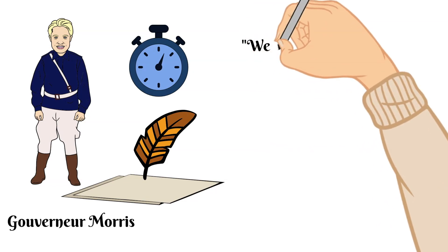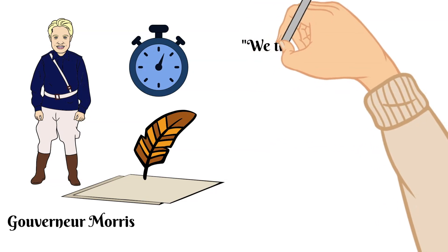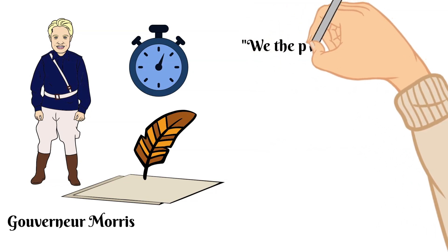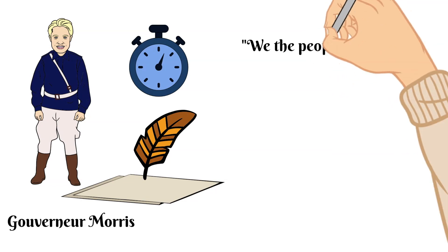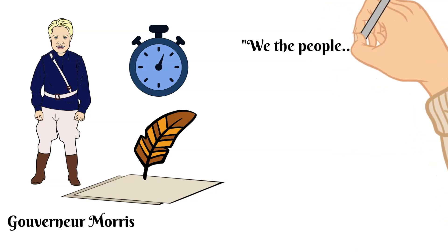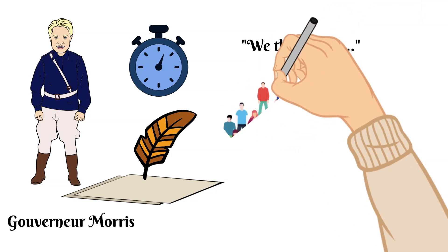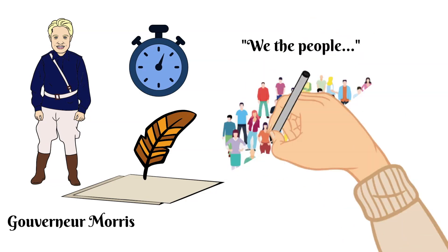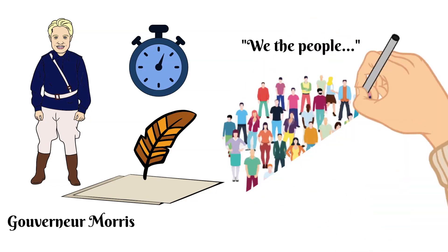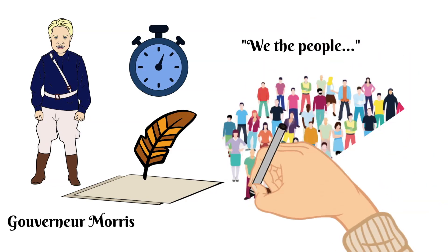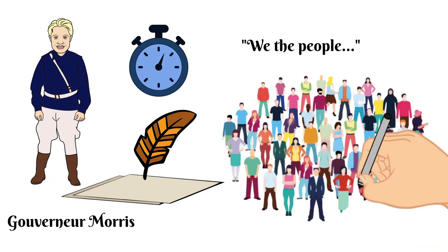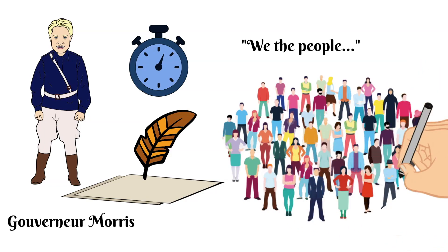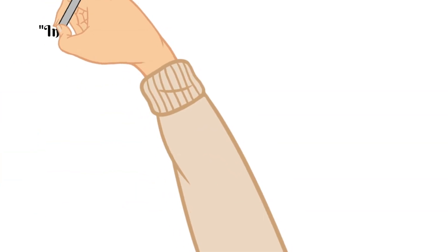It starts with 'We the People.' So who does this mean? Which people? This means all of the citizens of the United States — every single one of them. They are saying that the Constitution is speaking on behalf of the citizens of the United States.